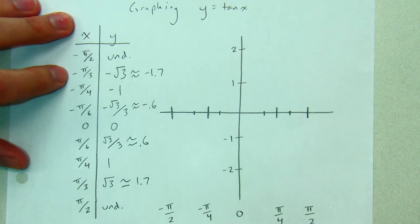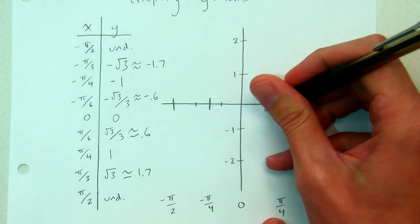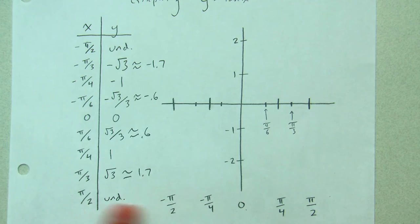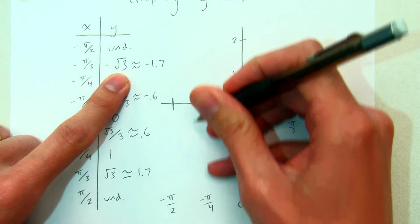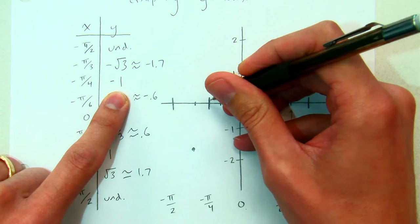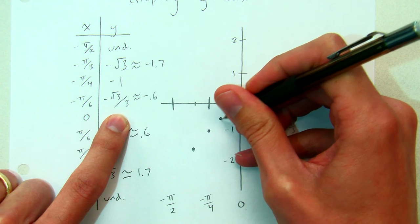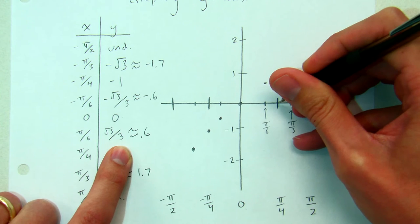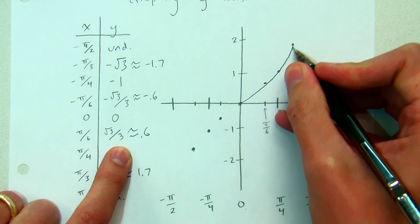Let's plot these points. I've got my graph here going from negative pi over 2 to positive pi over 2. Here's x equals 0. Halfway between 0 and pi over 2 would be pi over 4. So this right here is pi over 6, and this is pi over 3. And here we've got negative pi over 6 and negative pi over 3. So negative pi over 3 comma negative 1.7 gets me down here. Negative pi over 4 comma negative 1 is this coordinate. Negative pi over 6 comma negative 0.6 is right there. Then 0, 0. Pi over 6 comma 0.6. Pi over 4 comma 1. Pi over 3 comma 1.7. So it looks like tangent is doing something like this.